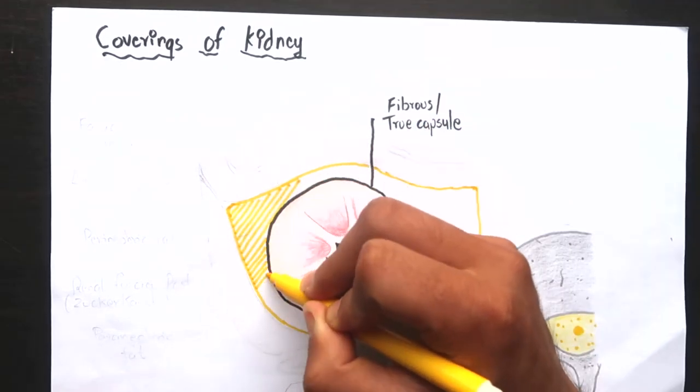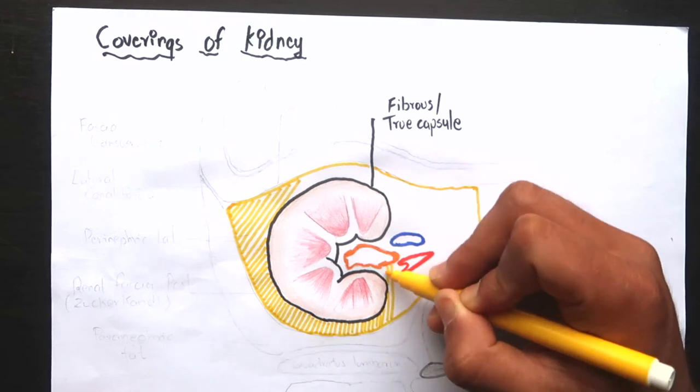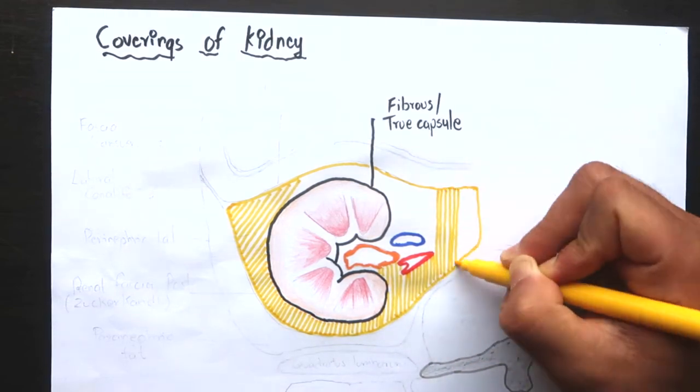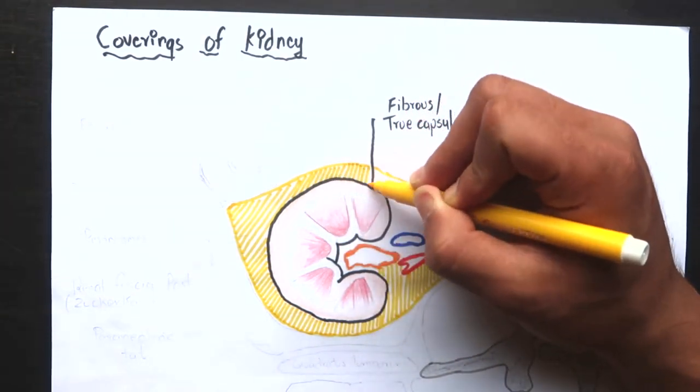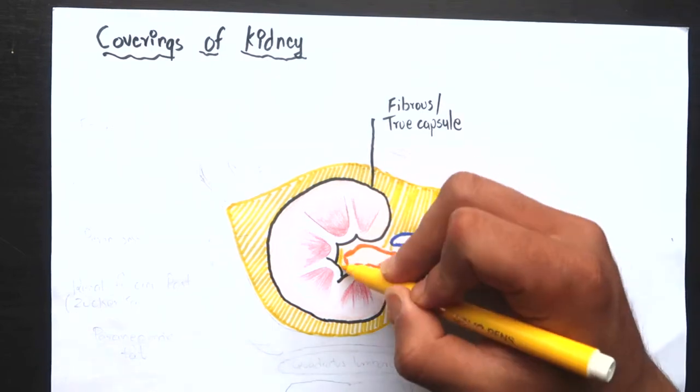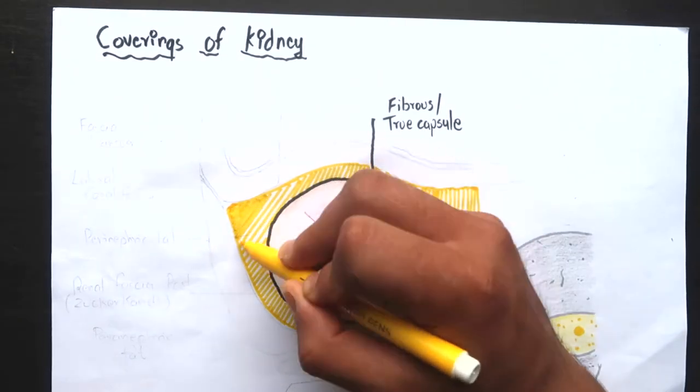Outside of the fibrous capsule, there is a layer of adipose tissue called perinephric fat. It is thickest at the borders of the kidney and fills up the extra space of renal sinus.